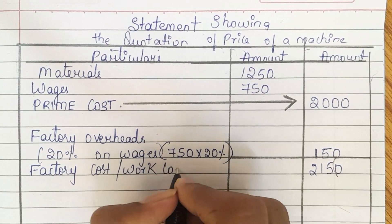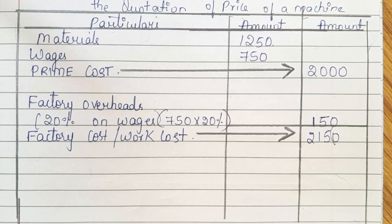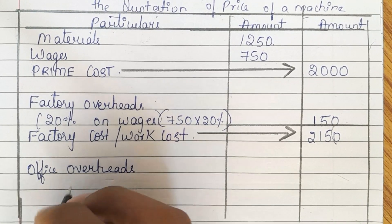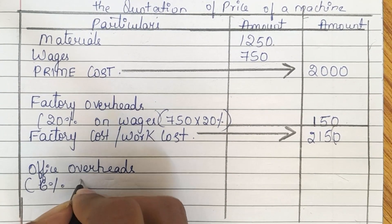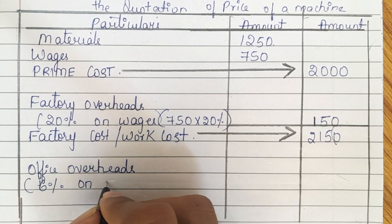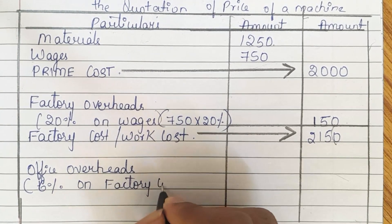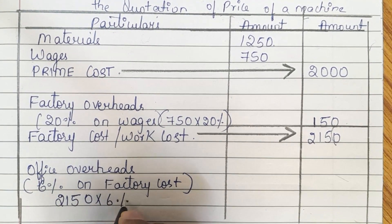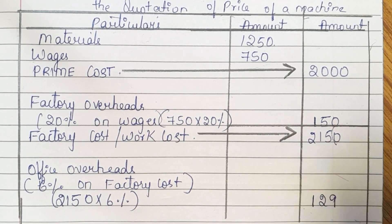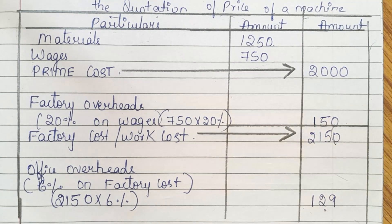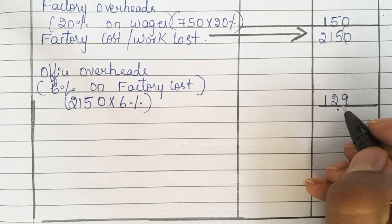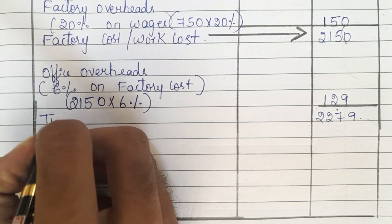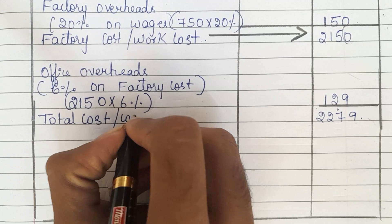Now we need to add office overhead. We found that office overhead should be charged at 6% on the factory cost. Factory cost is 2,150, so 6% on 2,150 gives Rs. 129. Add 2,150 and 129 to get Rs. 2,279. This is our total cost or cost of production.